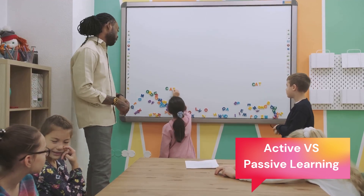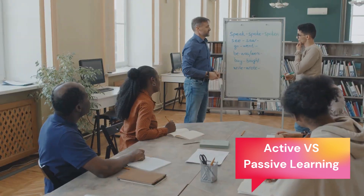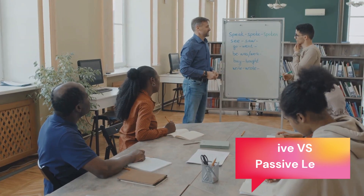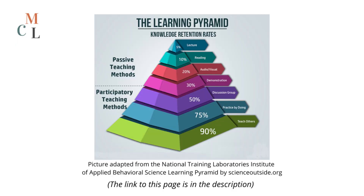And guess what? Active studying is harder, and so you need more of that. If you look at the Learning Pyramid by Edgar Dale, you can clearly see that reading leads to a 10% retention, watching to a 20% retention. But practicing has a 75% retention outcome.